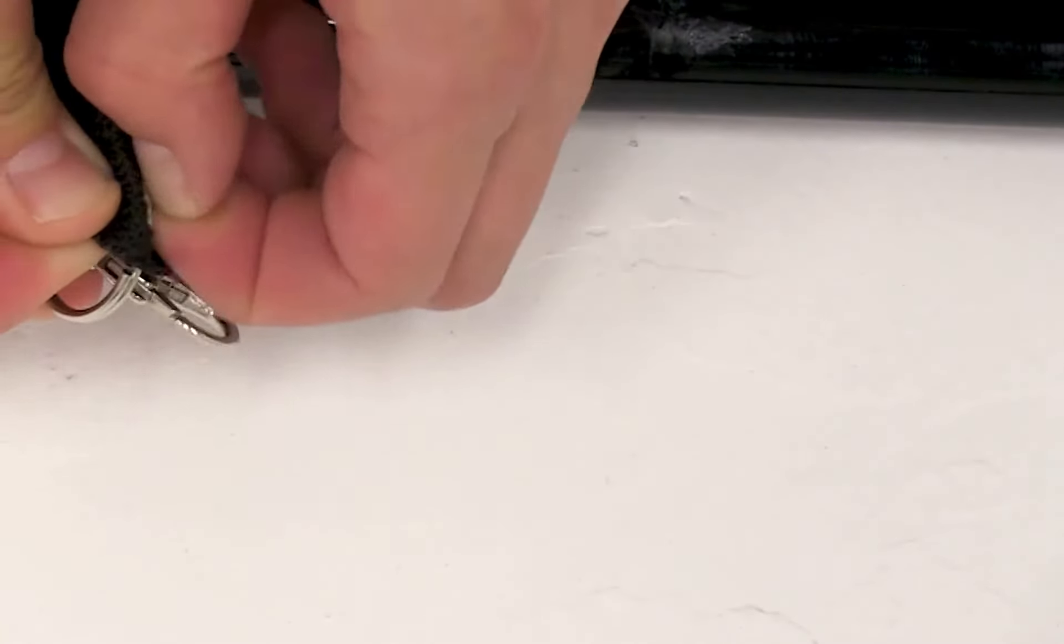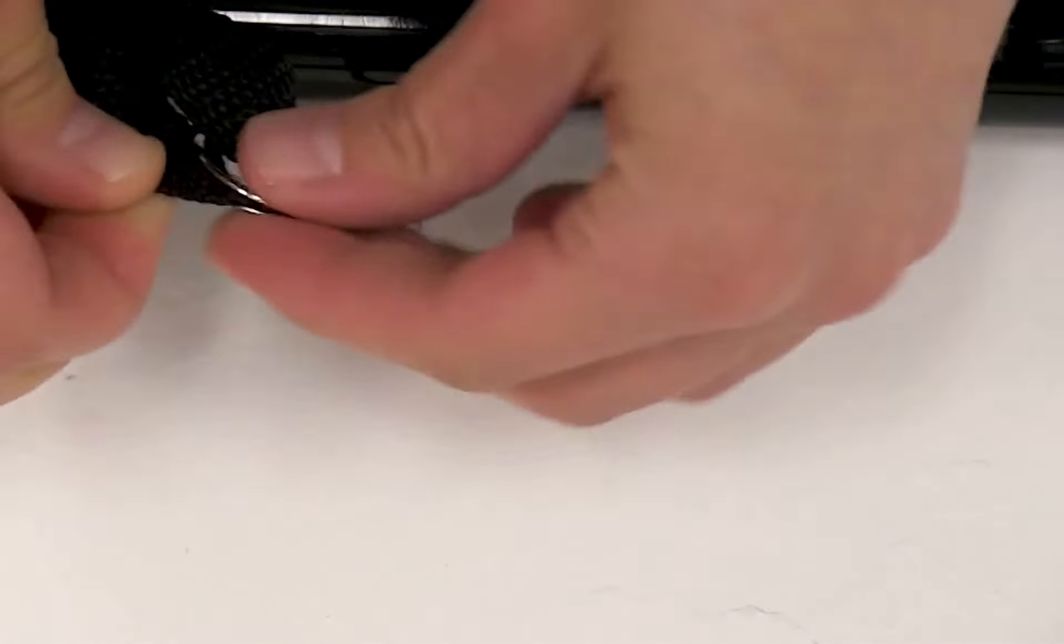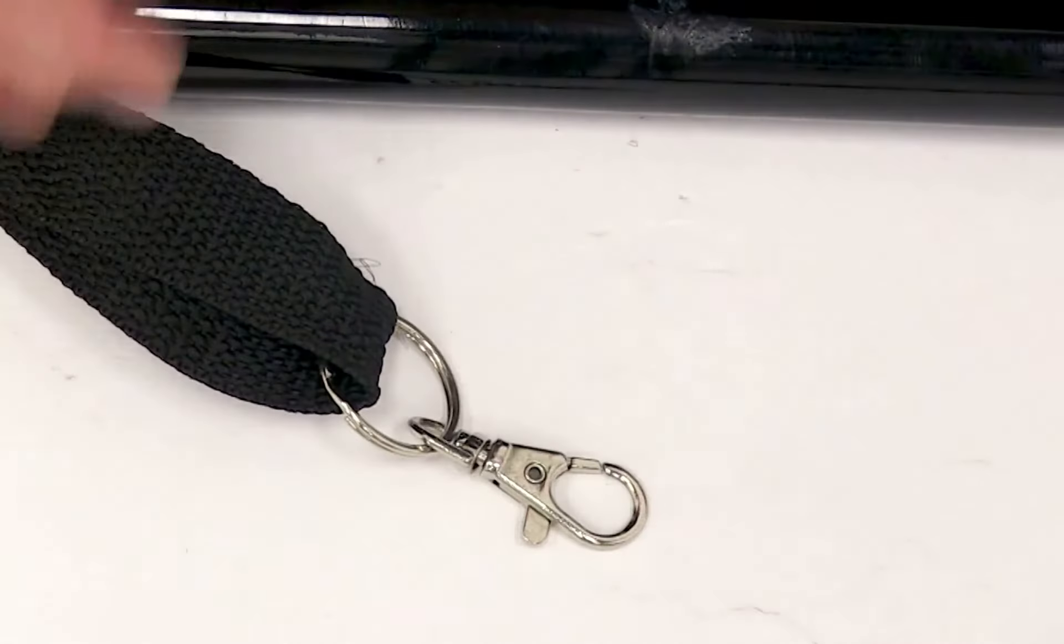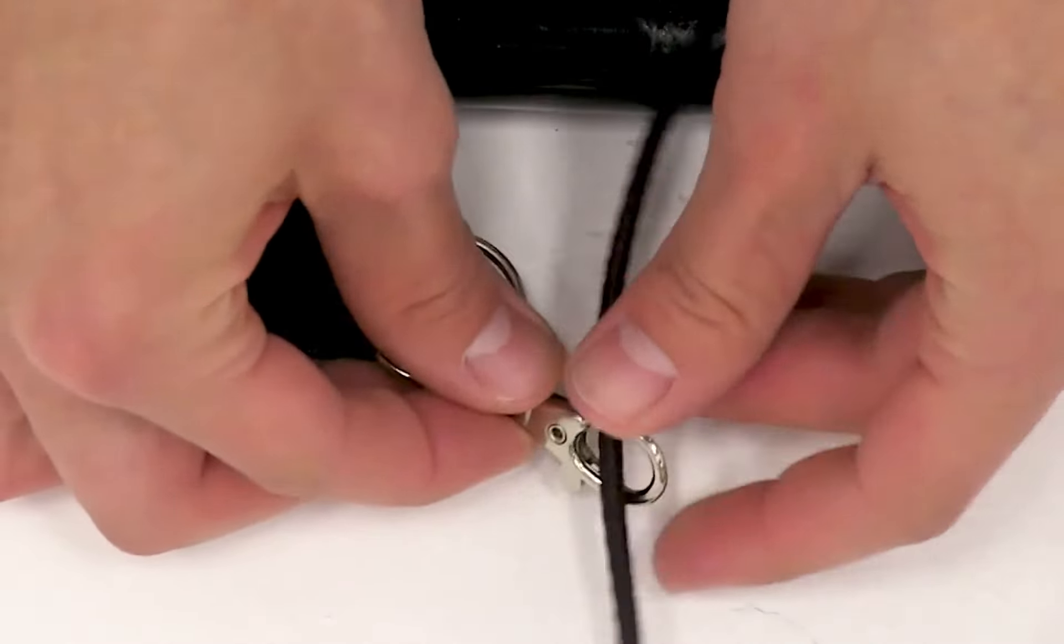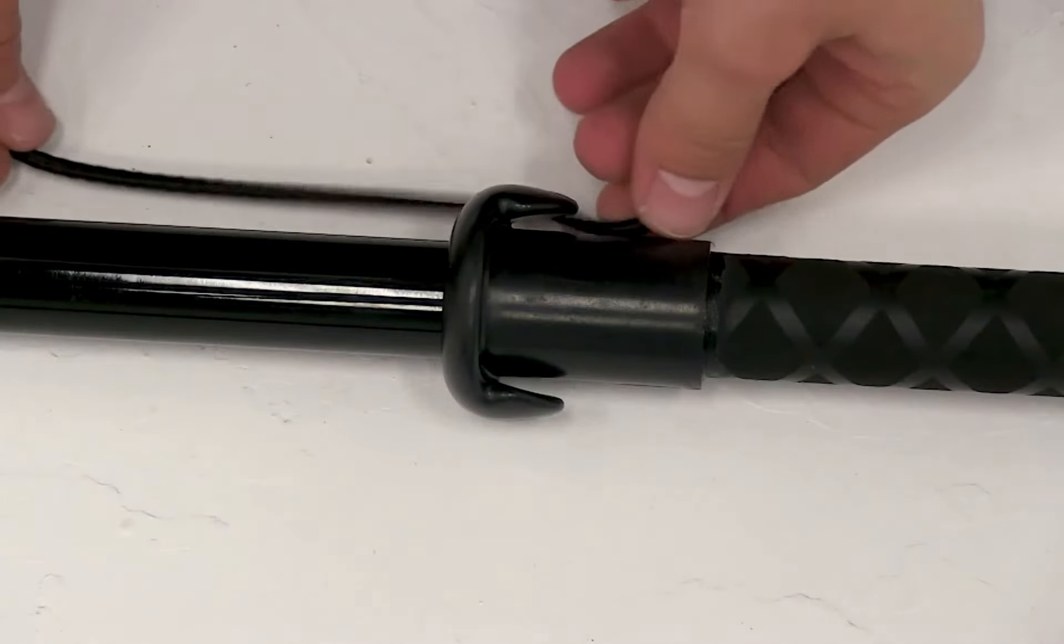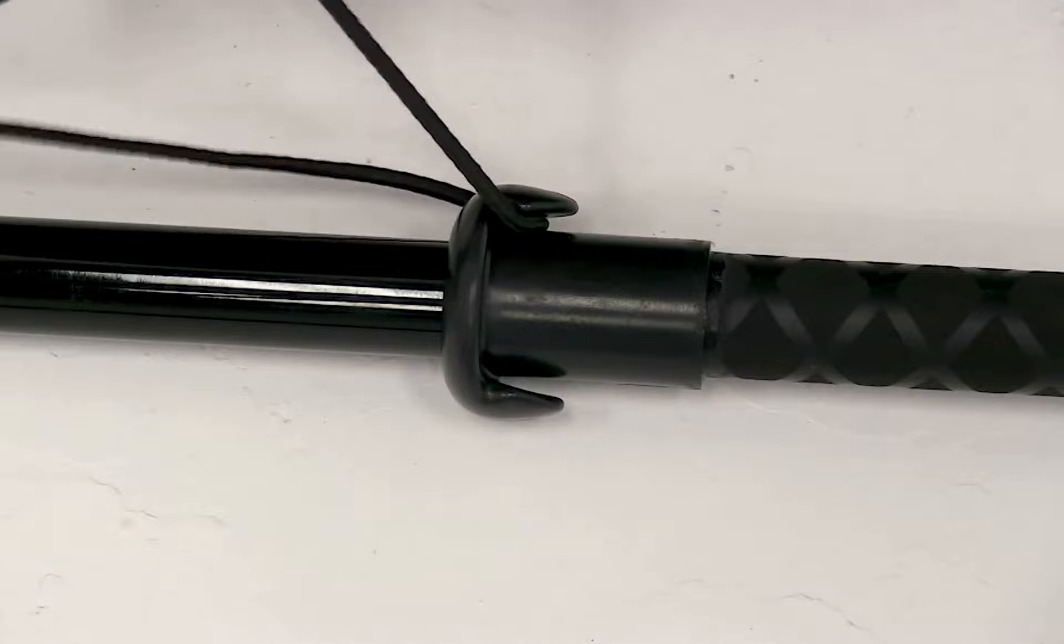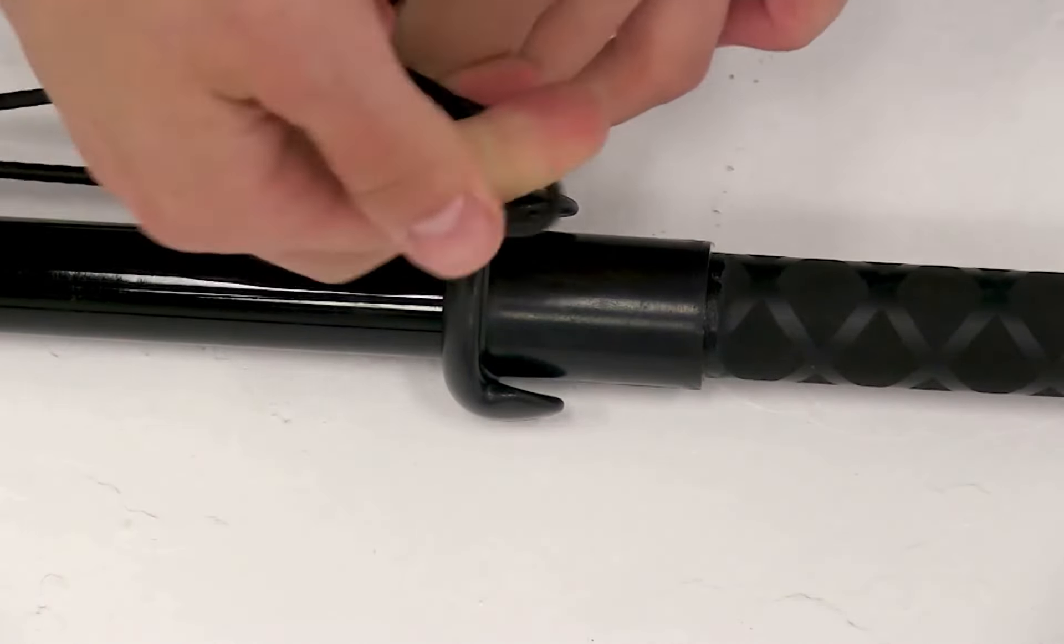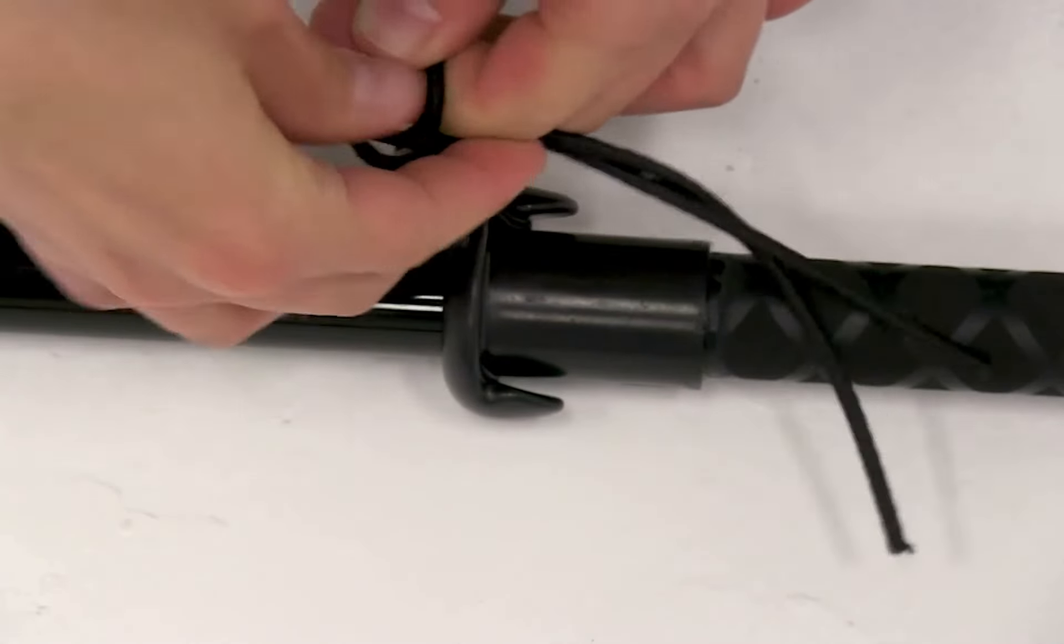Then you're going to insert the elastic strap through the bottom of the clip. Then you're going to pull your graphic tight. You're going to take the elastic strap and put it around the hook on the bottom of the pole and then you're going to tie a knot. This will keep your graphic secure and taut.